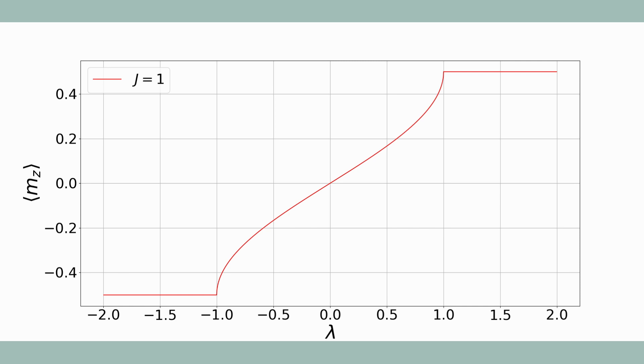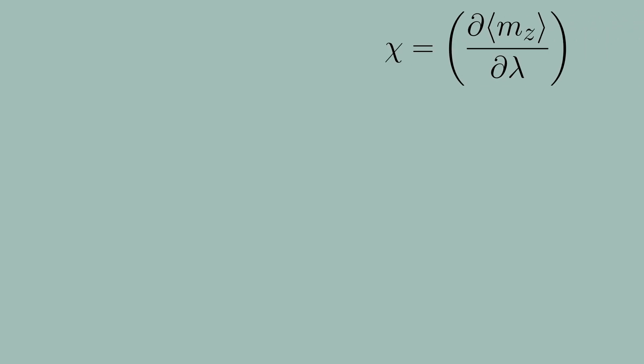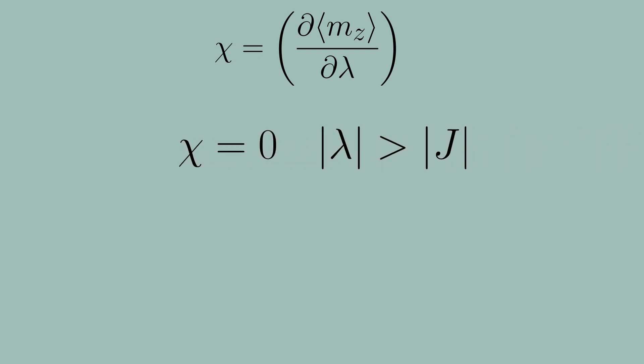An interesting thing to compute is the magnetic susceptibility of the ground state. For two of the parameter regimes this is trivial - it's just zero. But for the more interesting parameter regime we get the following interesting curve. This curve is divergent for lambda equal to the coupling parameter j, and therefore we see that we have a second order phase transition. We haven't talked too much on this channel about critical scaling, so perhaps we can come back to this when we talk more about critical exponents. But for now we've seen a model go through a second order quantum phase transition as a function of the magnetic field which is really cool.